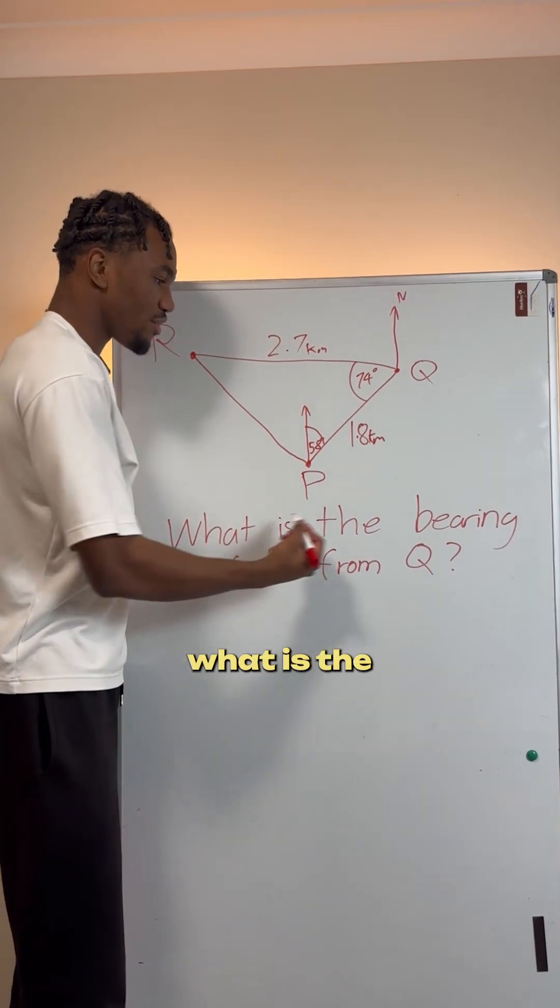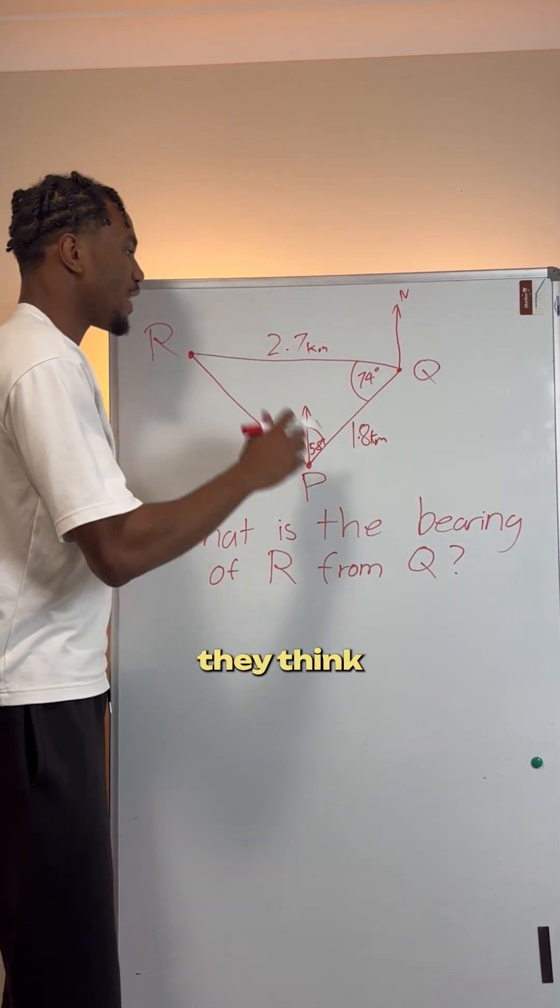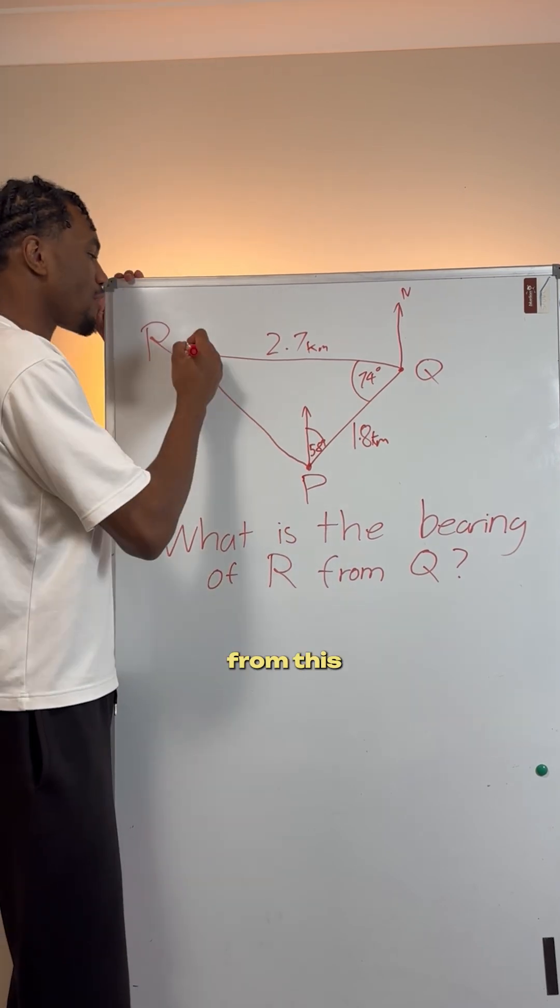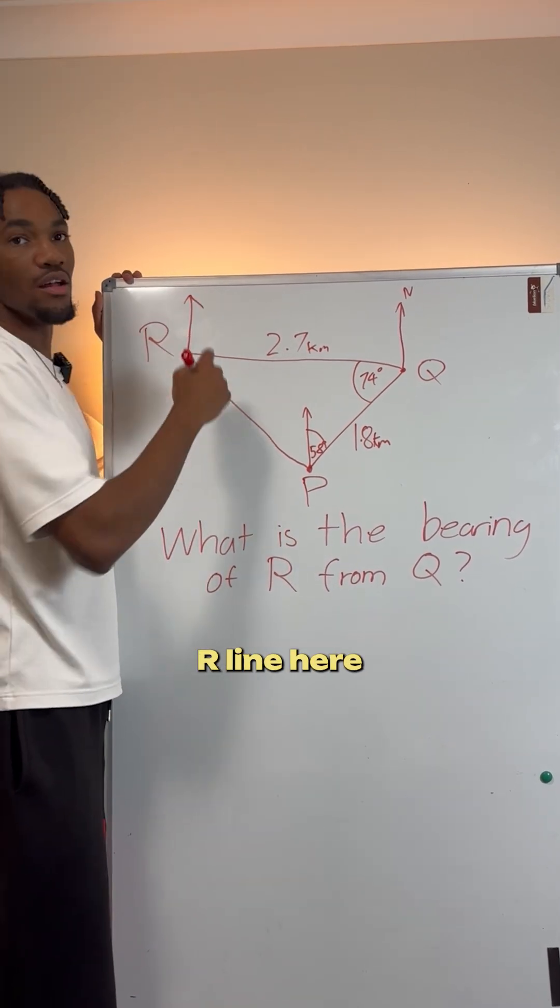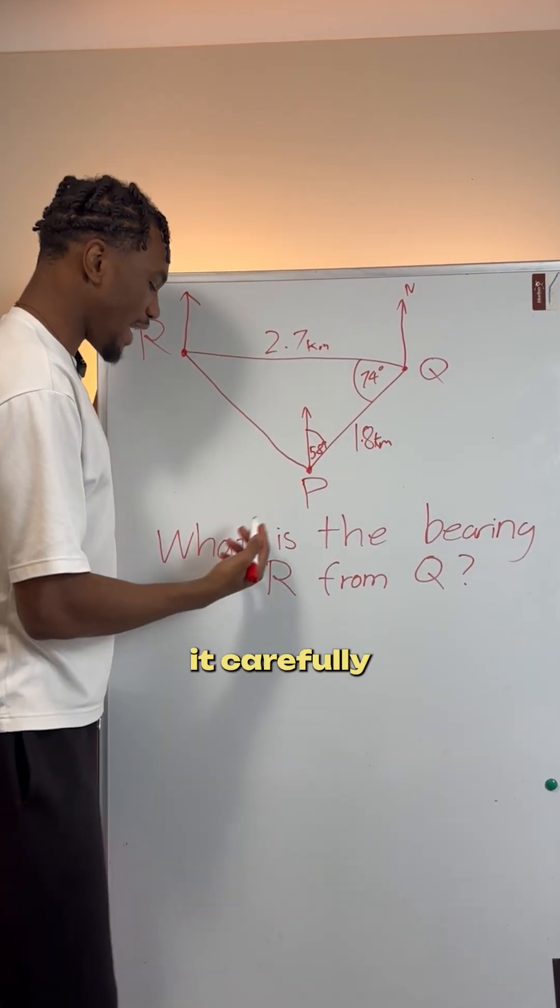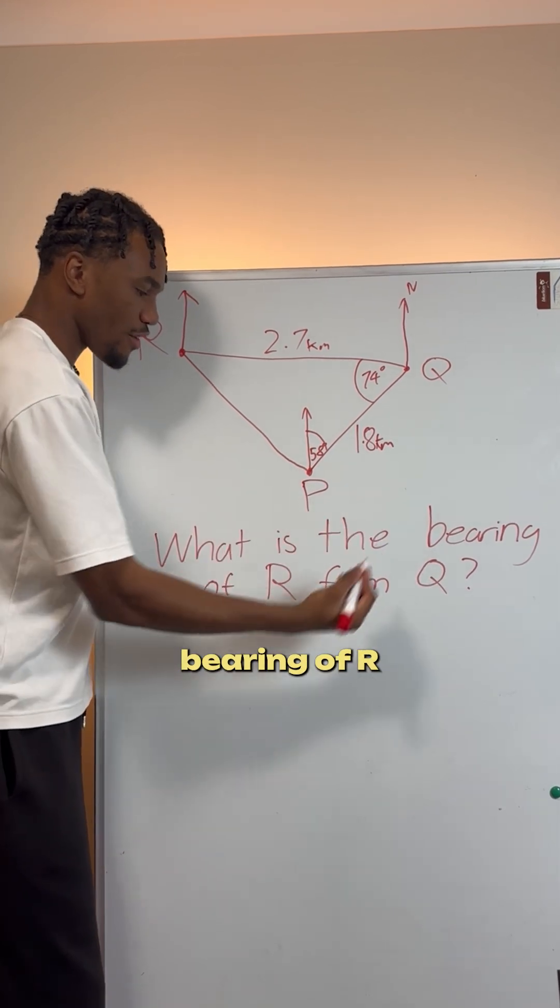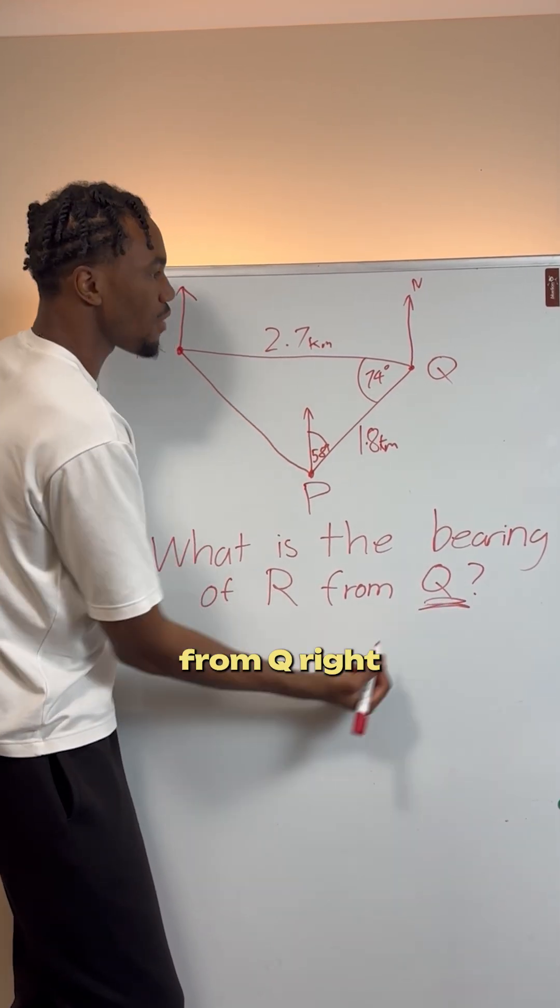So when most students read this, they see what is the bearing of R from Q? They think they have to find the bearing from this R line here. But if you read it carefully, the question says what is the bearing of R from Q.